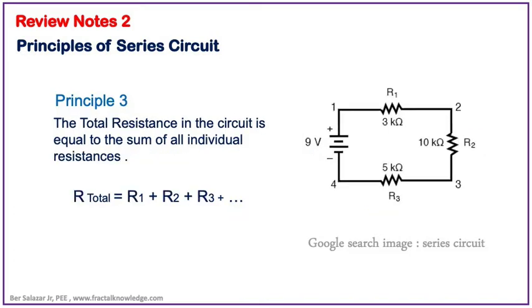And the third principle sa series circuit is the total resistance of the circuit is equal to the sum of all the resistances or R total is equal to R1 plus R2 plus R3 and so on.